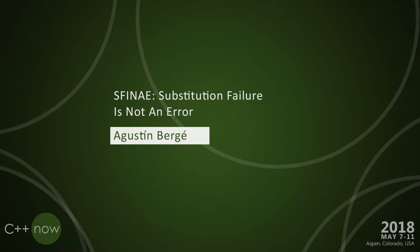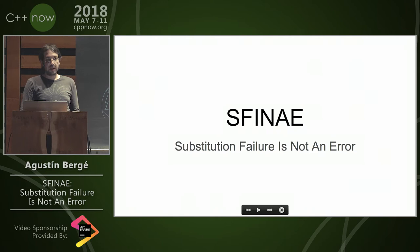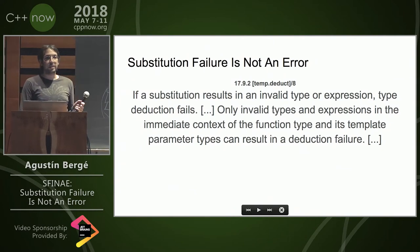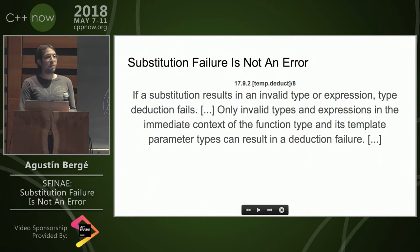I want to talk about SFINAE today. Substitution failure is not an error. What that means is that during template substitution, if there's an error in the immediate context, then rather than making the program ill-formed, the type deduction fails. So if you're talking about a function template, we say the function doesn't participate in overload resolution.